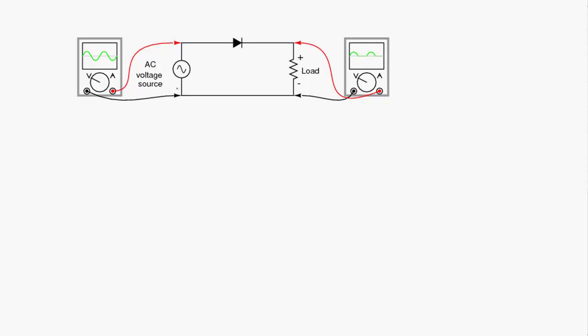One thing you need to remember as I'm going through this description is that DC simply means the current is always in one direction, but it can still be a changing value.